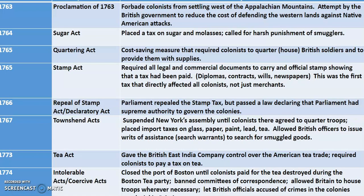There are several taxes, and you'll have a chart on Google Classroom to reference. The Proclamation of 1763 angers the colonists greatly because they can't get that western land. Then the British placed new taxes — and while the British people actually paid far more in taxes than American colonists, the Americans had a particular reason to be upset. The Sugar Act taxed sugar and molasses, and importantly, Britain was now going to punish smugglers and actually enforce the laws.